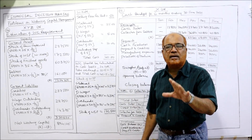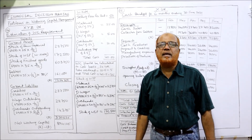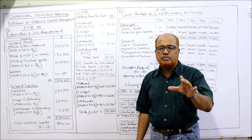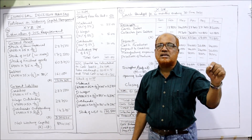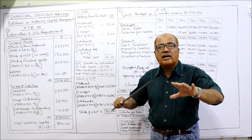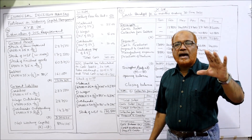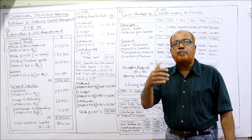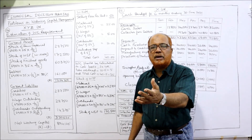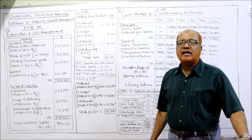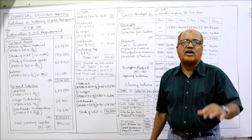This is the end of all problems on working capital. The next problem is on cash management. One technique of cash management is preparing a cash budget. I have already explained cash management theory in a previously uploaded video — go to the playlist and watch that before this. A cash budget is a plan showing the different receipts and payments for a future period of time — it shows cash receipts, cash payments, and cash balance. Cash budgets are typically prepared on a monthly basis: three-month, six-month, or one-year cash budgets.